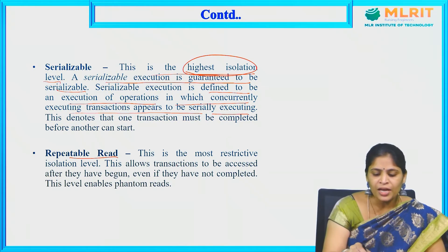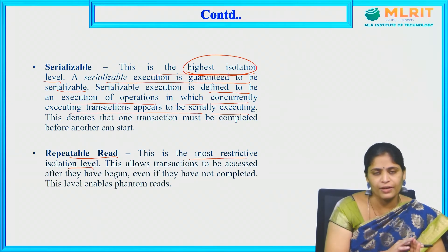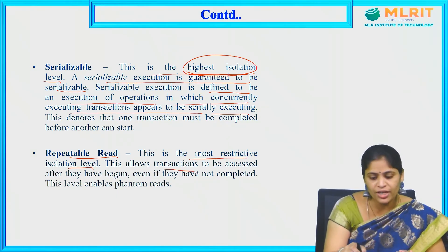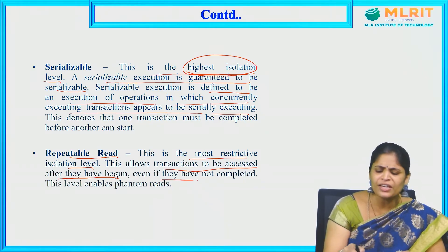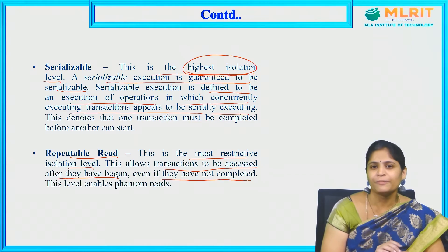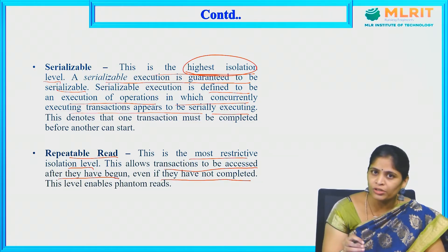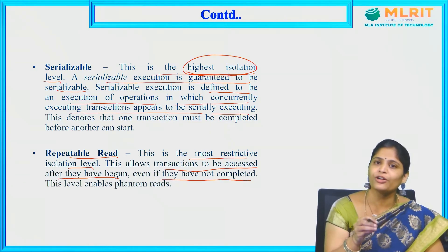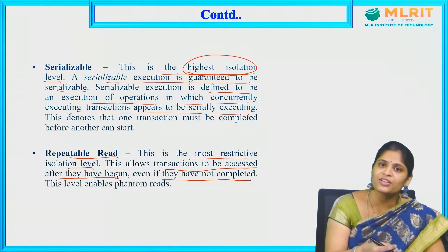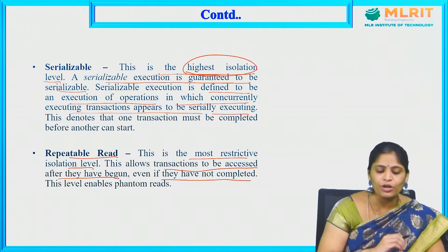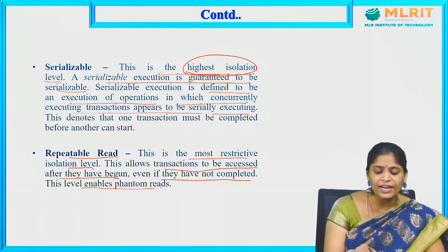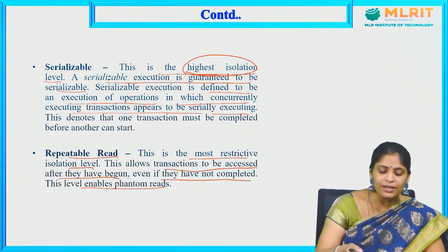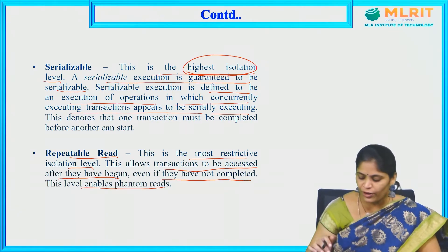Repeatable Read is the most restrictive isolation level. This allows transactions to be accessed after they have begun, even if they have not yet completed. It will allow the second transaction to read or write before the first transaction has been committed. This level can lead to phantom reads.